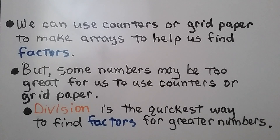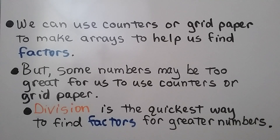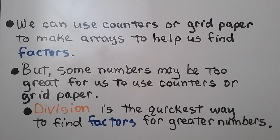We can use counters or grid paper to make arrays to help us find factors, but some numbers may be too great for us to use counters or grid paper. Division is the quickest way to find factors for greater numbers.